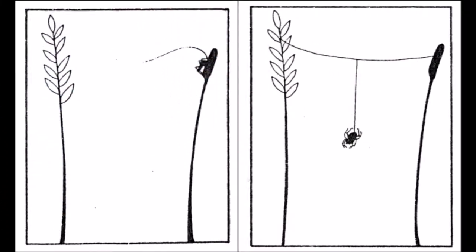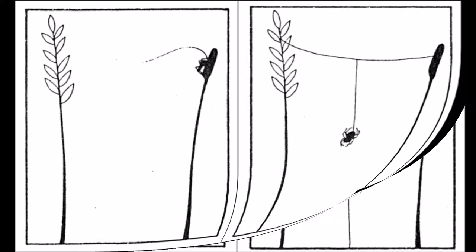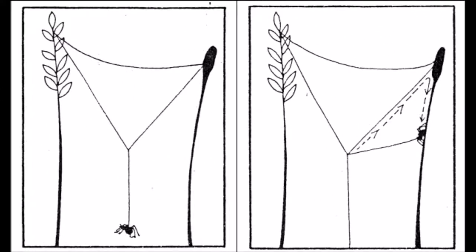The process for constructing a spider web is quite intricate. The spider first finds a suitable location to begin constructing the web. It then releases an incredibly light piece of silk, which is taken by the wind across a gap to another point, such as a branch or bush.